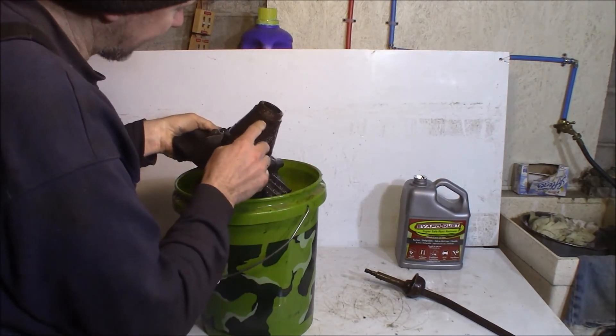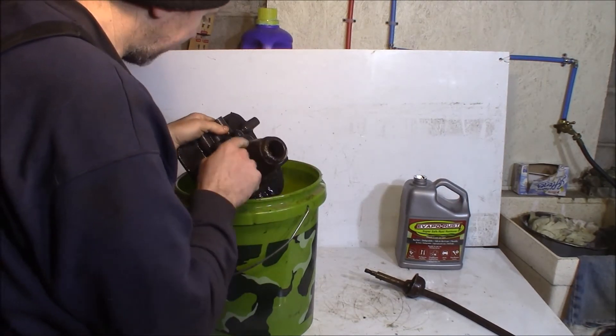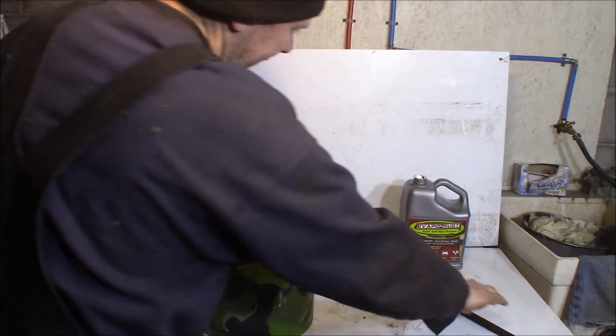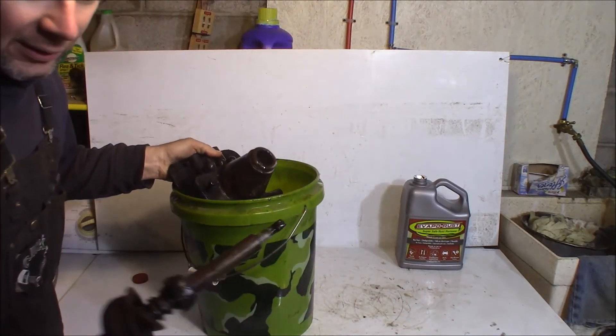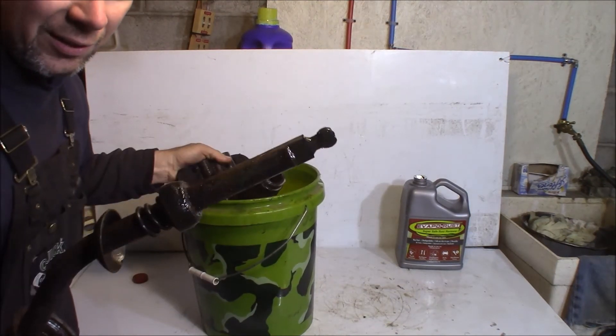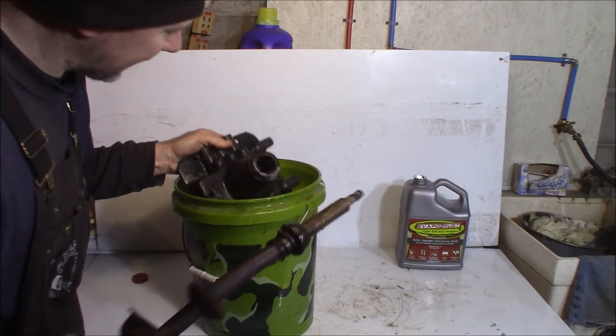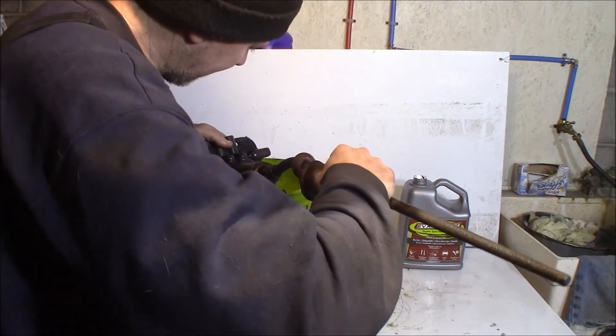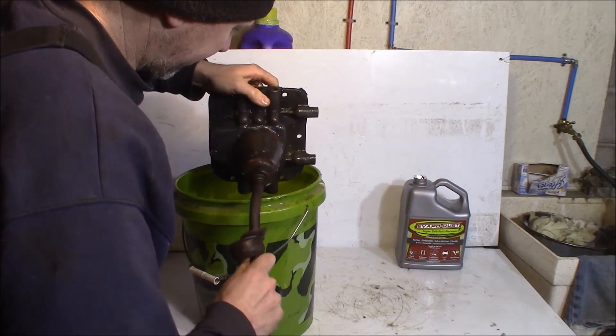The only rust that's left is up here on the tower that wasn't submerged. But I could put this in upside down and kill the rest of this on top here. But my shifter piece, here you can see there's a little bit of scale on it but the end came free and it came right out. That's awesome. So the mechanism should work now. Hopefully.